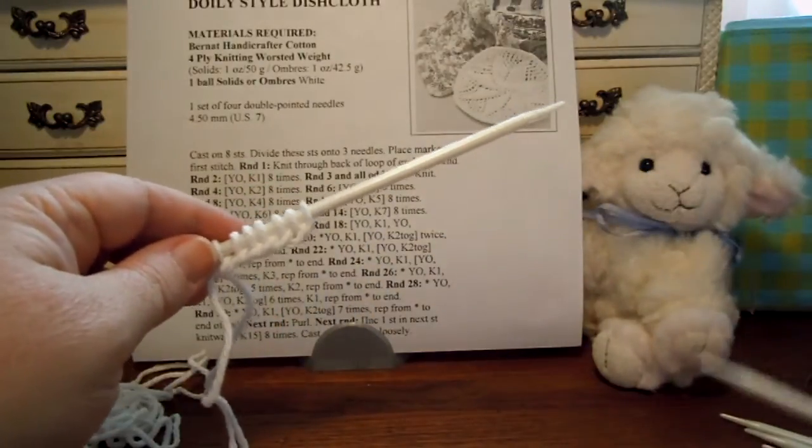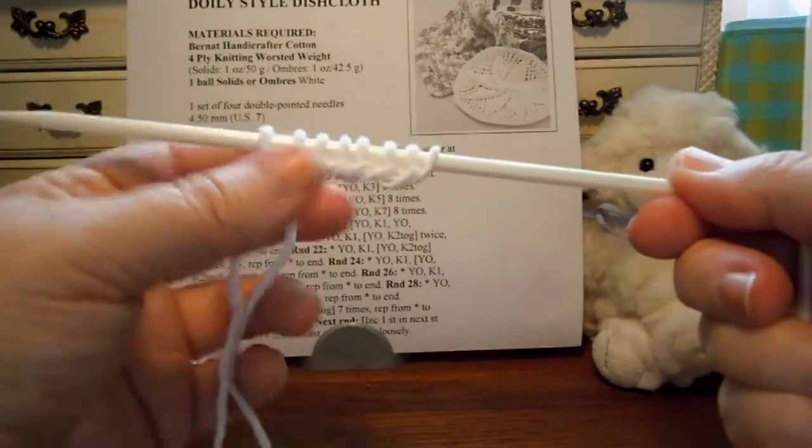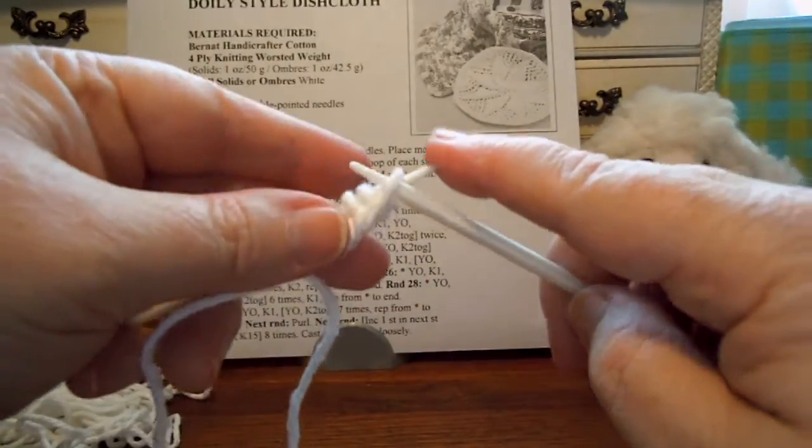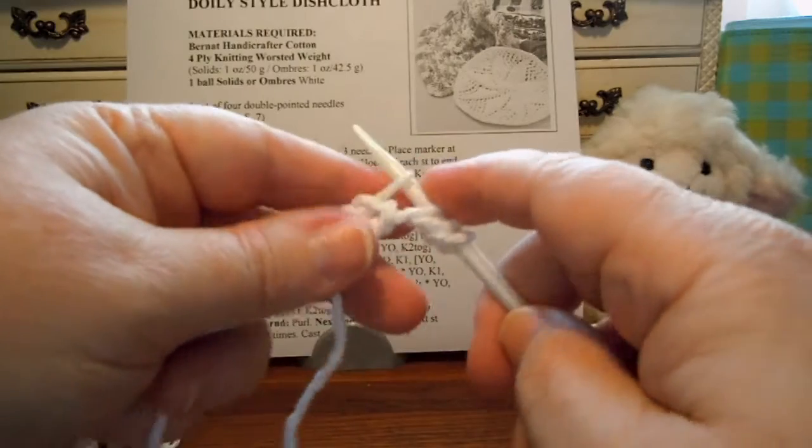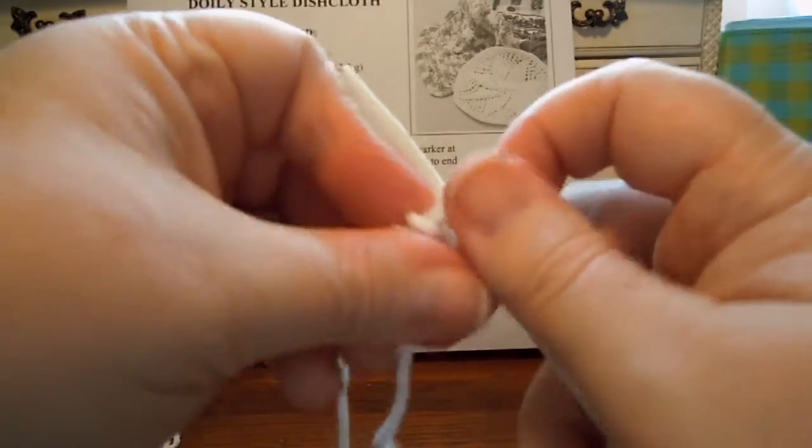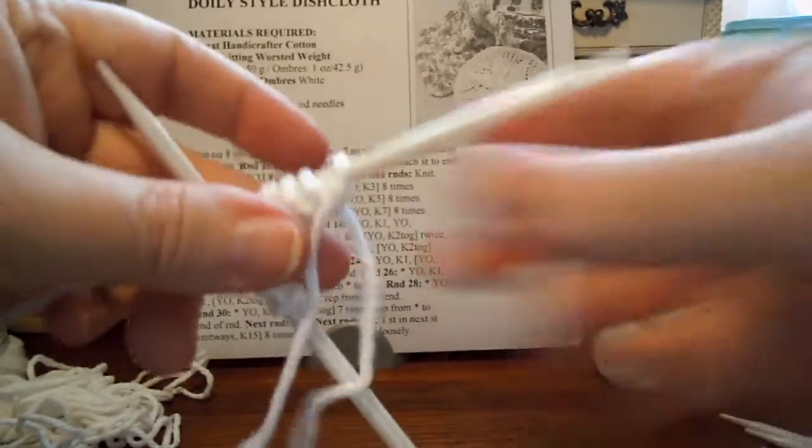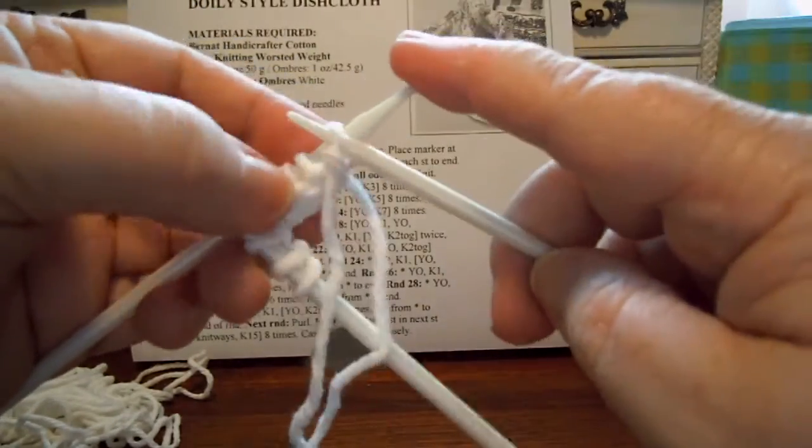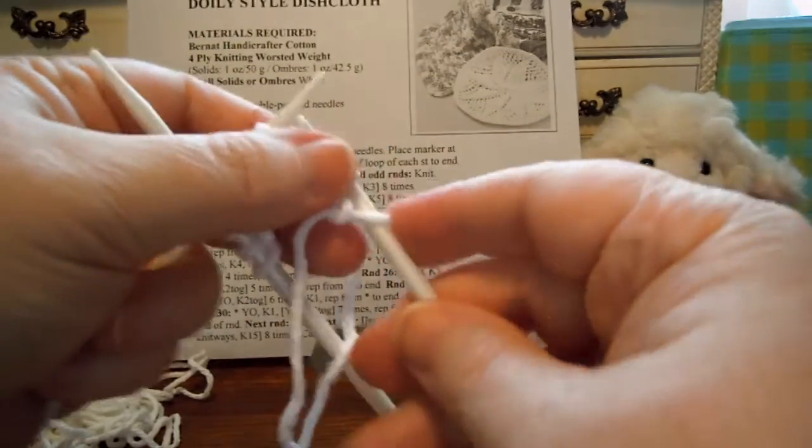It says to divide that onto three needles. So right now I've got all eight stitches on one needle. So all I have to do is just slide over. I think I'll do three on that one, and I'll leave two on the center one. And then I'll flip it around to the other side here, and I'll get these three over here. There.